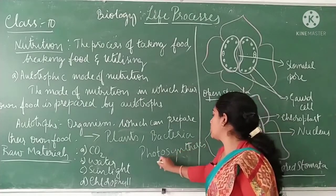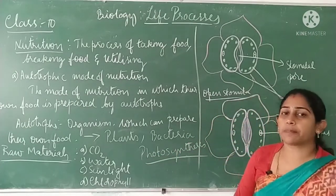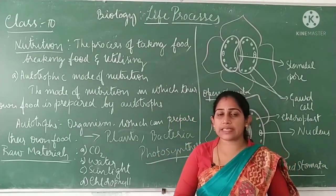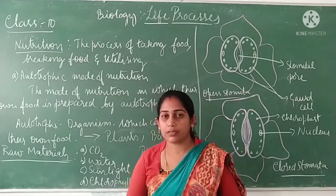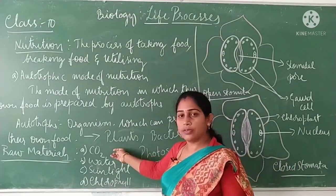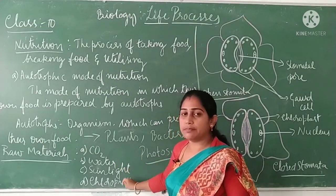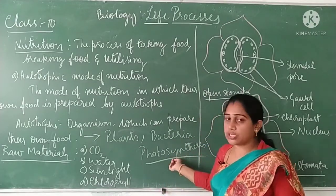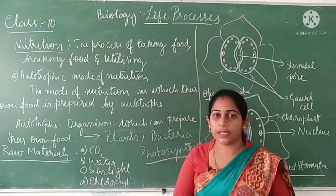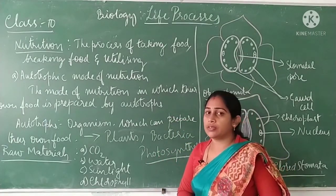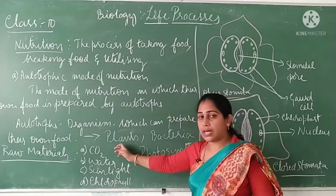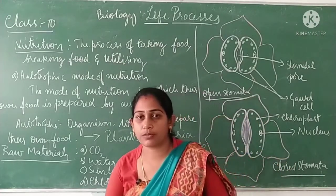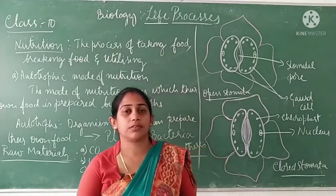By the process of photosynthesis, autotrophs can prepare their own food. Photosynthesis is a process wherein green plants prepare their own food by using raw materials like carbon dioxide and water, in the presence of sunlight, with the help of a pigment called chlorophyll. We have also learned the important events which take place during photosynthesis.